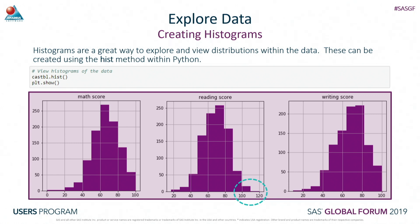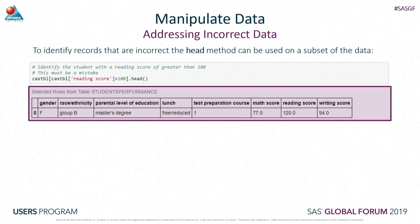So let's have a look at this a bit closer. If I want to find out where this value is and what's wrong with the data - we know there's something above a hundred within our data set - I can use the head method with a filter. I've filtered the data to look at just the reading score values above 100. Within Jupyter Notebook or JupyterLab, it will display the rows identified. We can see that the reading score is 120, and since we know it's a percentage, that must be incorrect.